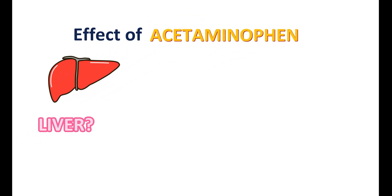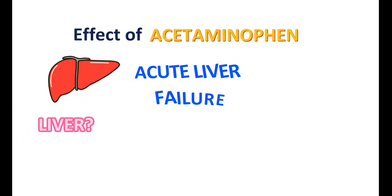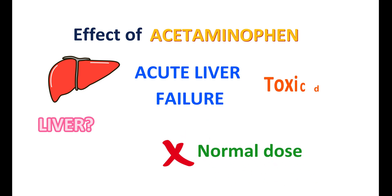What is the effect of acetaminophen on the liver? Acetaminophen can induce acute liver failure in many people and is one of the major reasons for development of liver toxicity. However, this liver toxicity is not observed at normal doses — only a toxic dose of acetaminophen can induce liver toxicity.